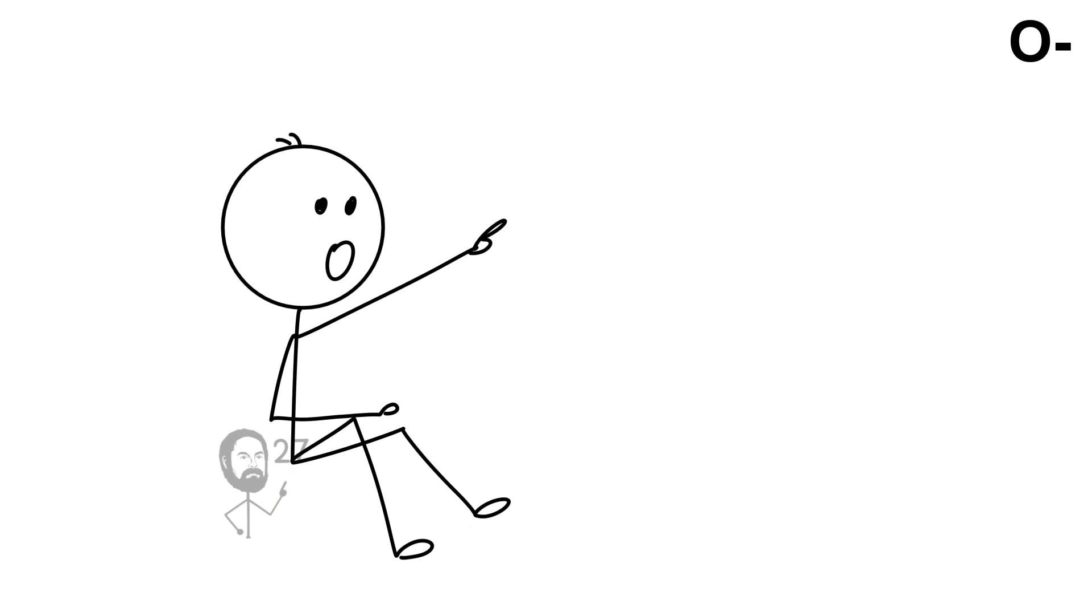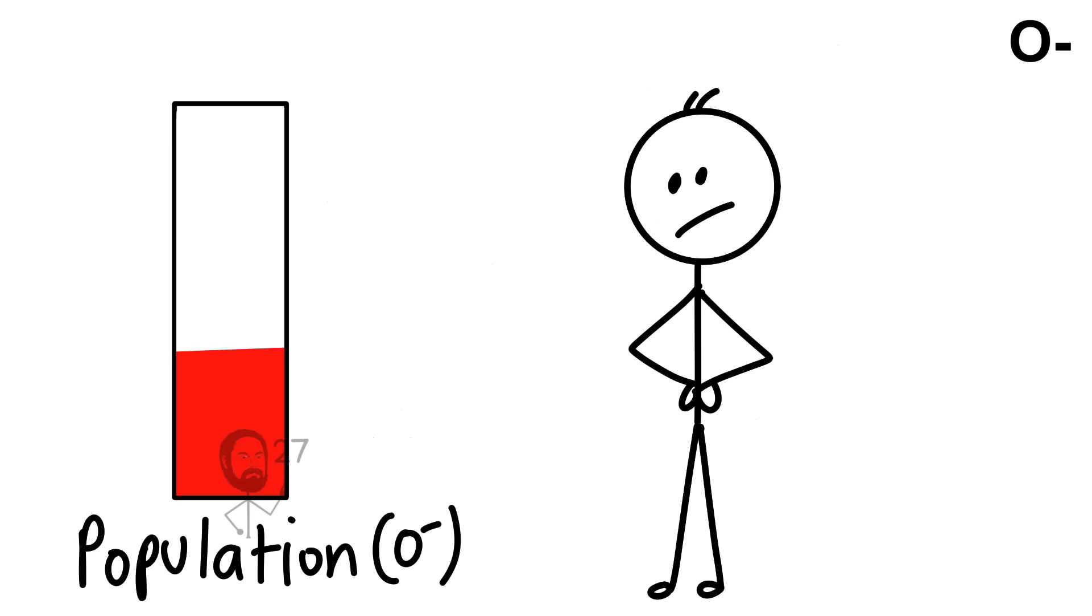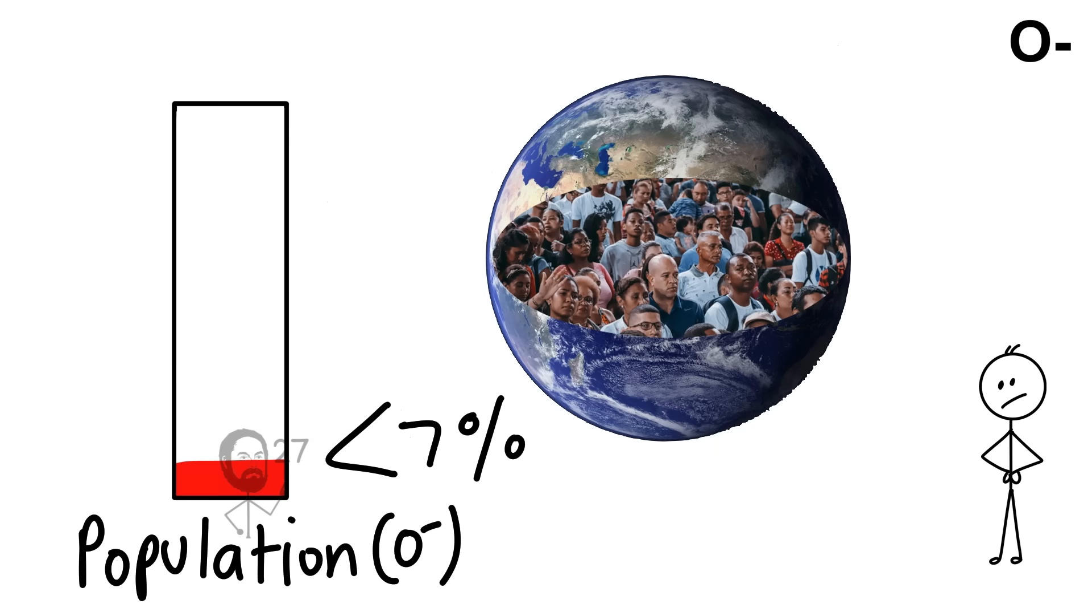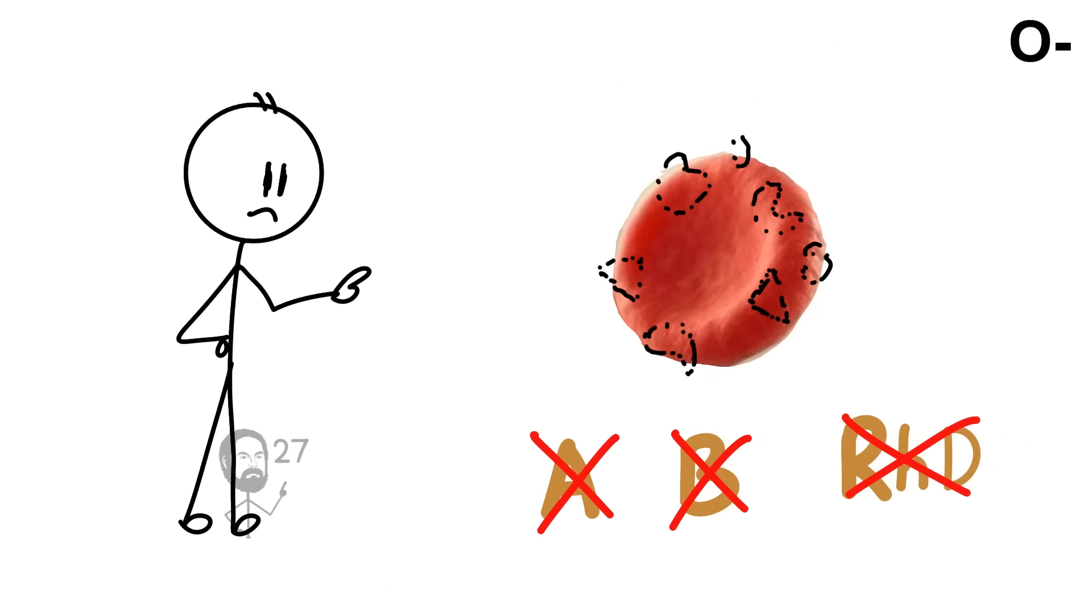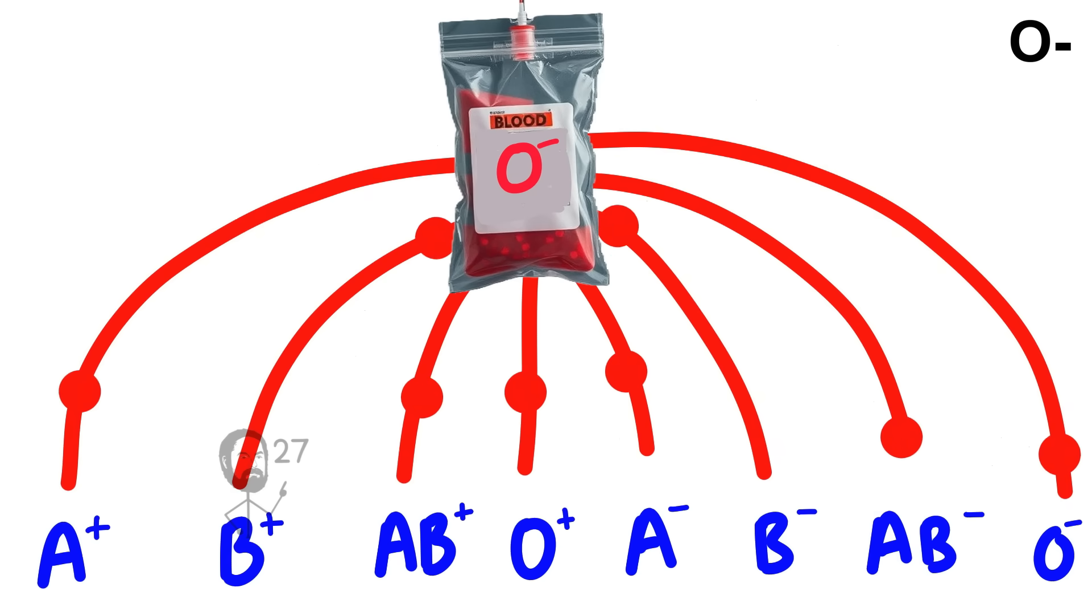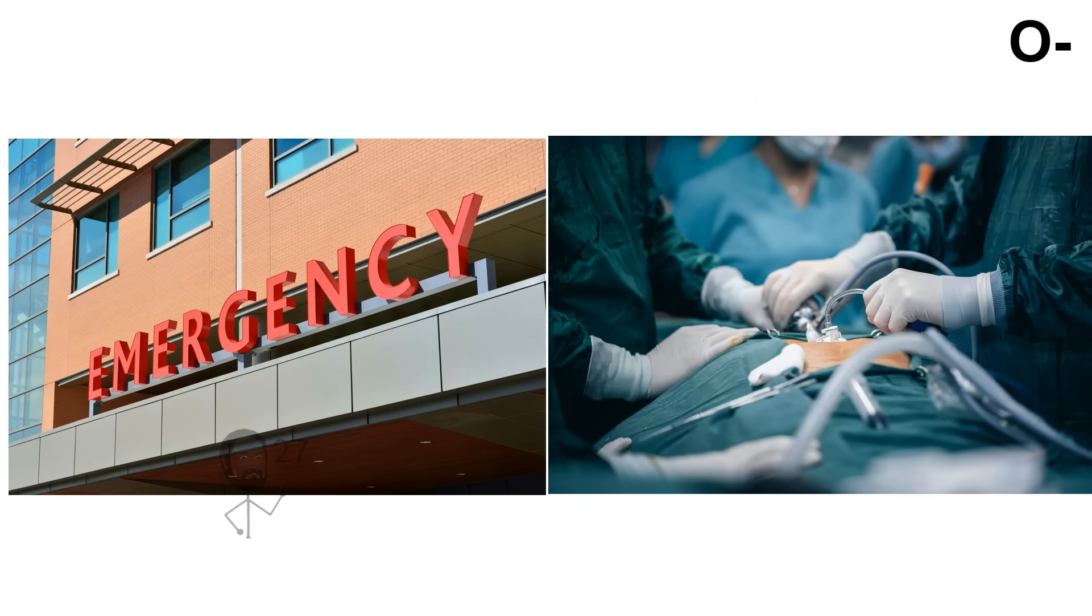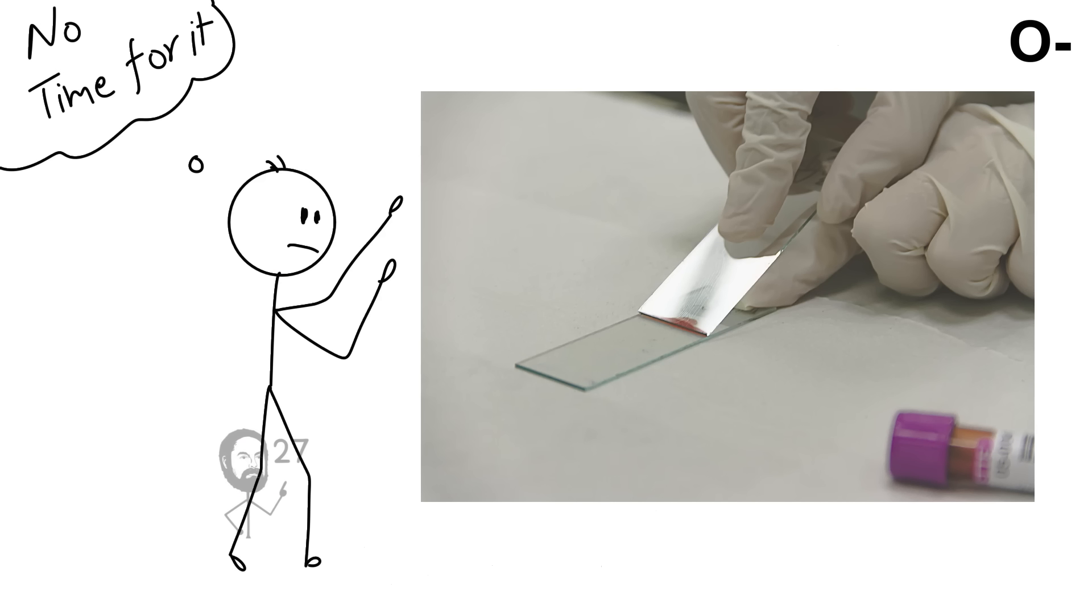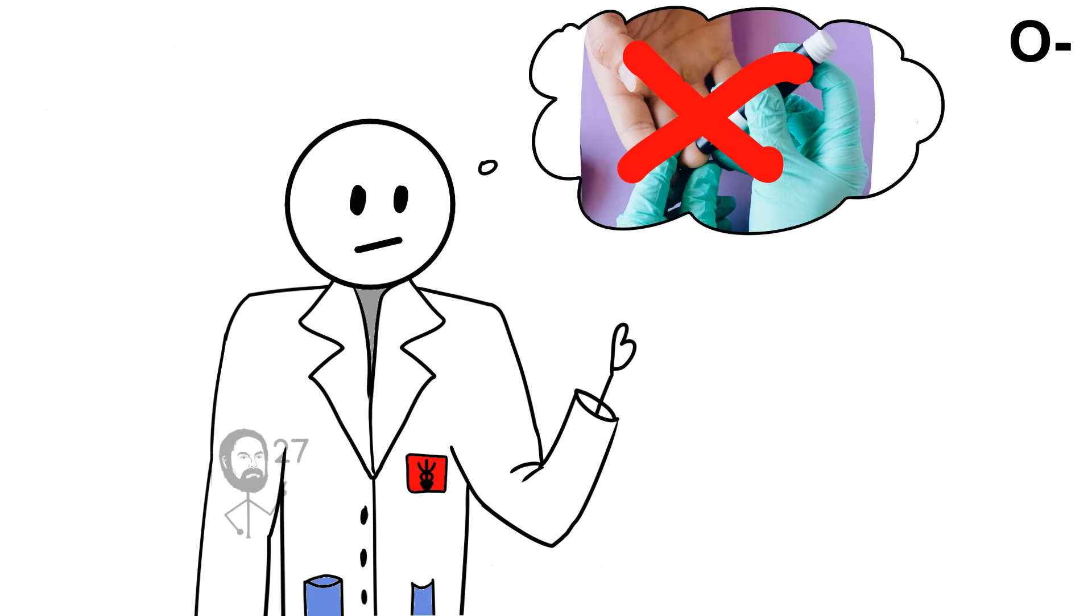O-negative is one of the most critical blood types in medicine, despite being carried by less than 7% of the global population. Its defining feature is the complete absence of A, B, and RHD antigens on the surface of red blood cells. Because of this, O-negative can be transfused into anyone regardless of their blood type, making it the universal donor for red cell transfusions. In emergency rooms and disaster situations where there is no time for blood typing, O-negative is the first choice, often saving lives when compatibility testing isn't possible.